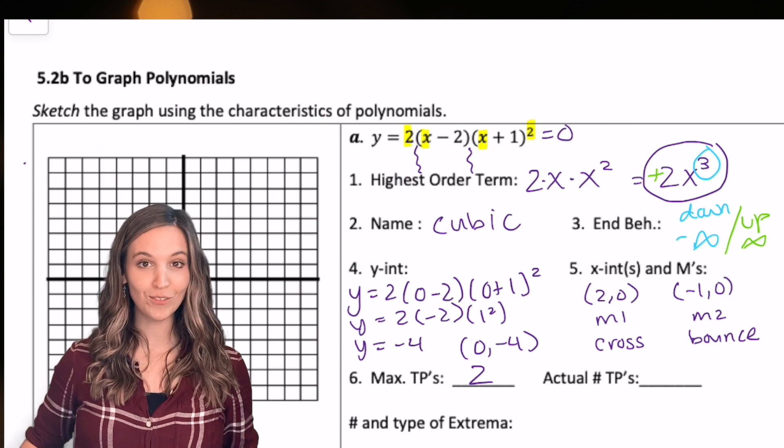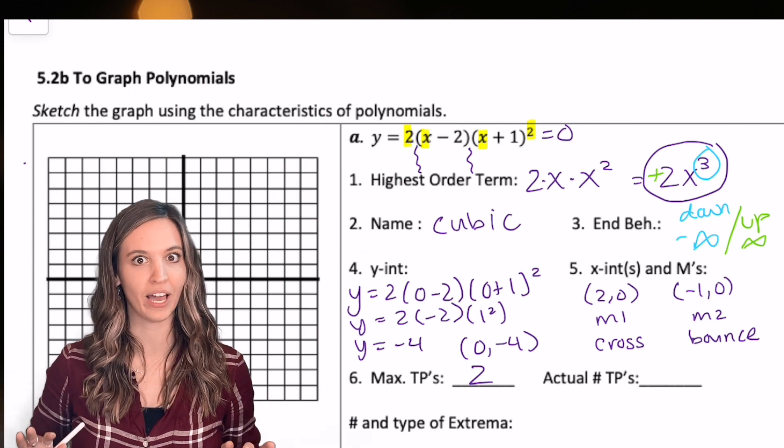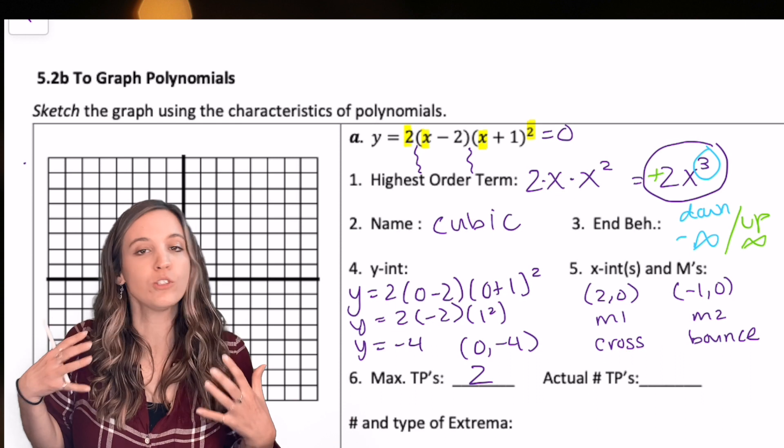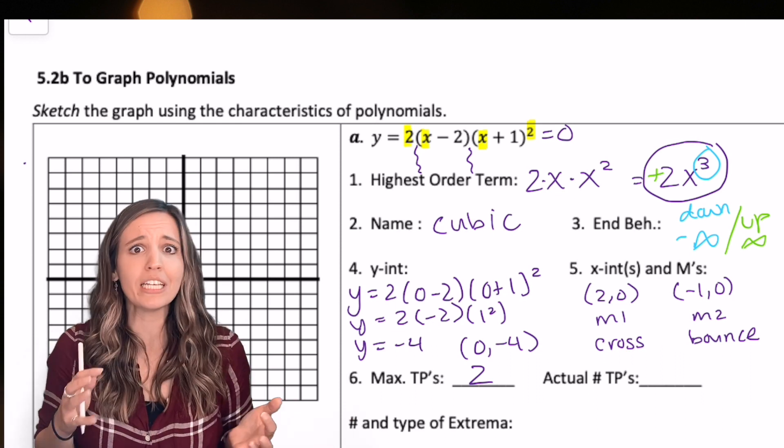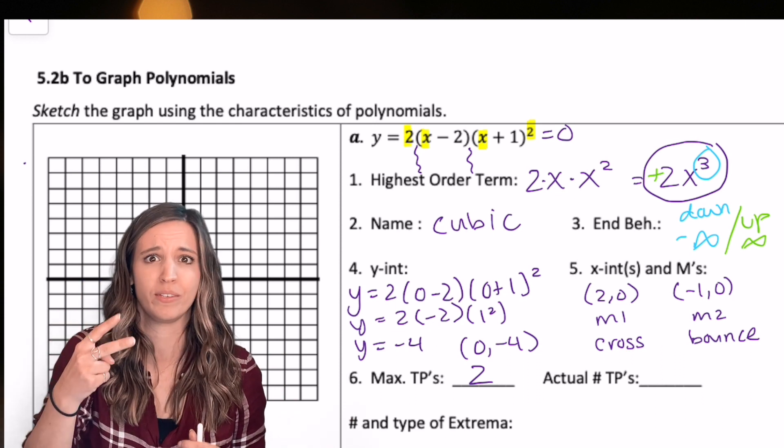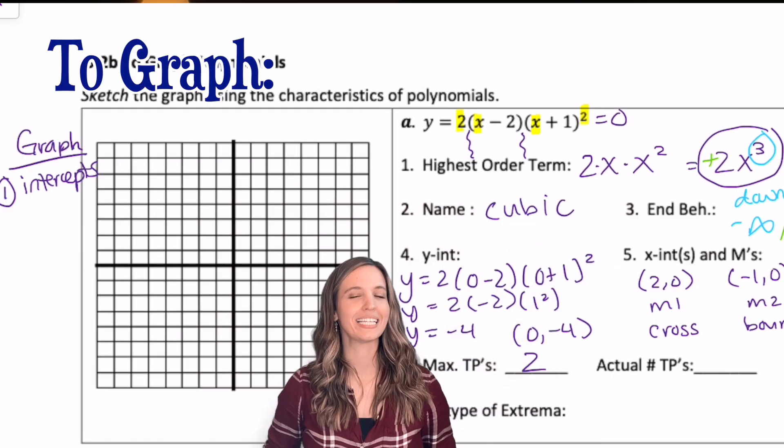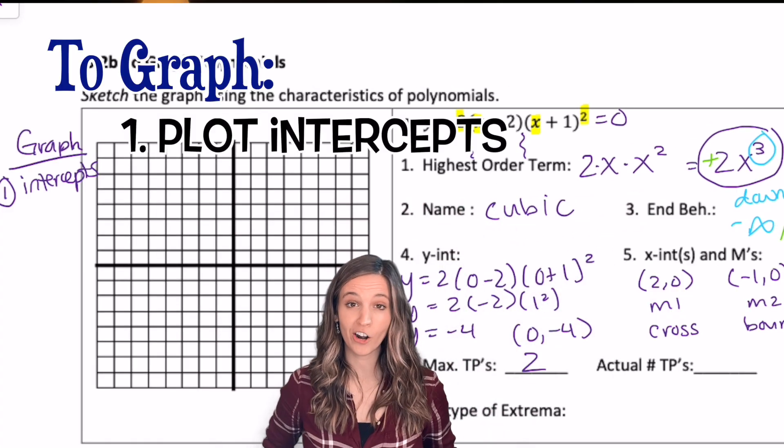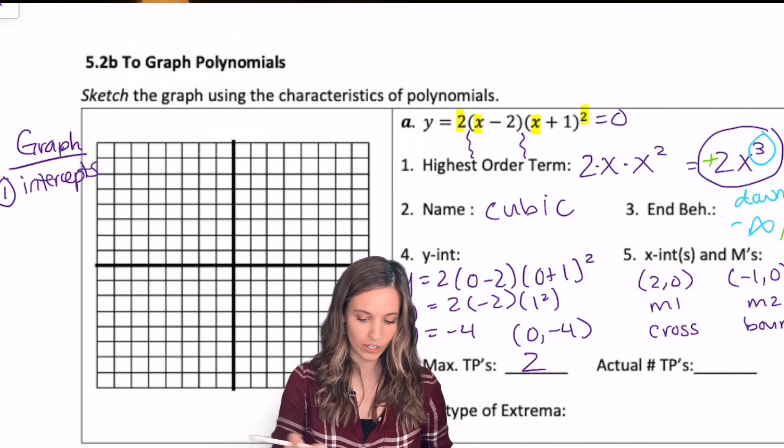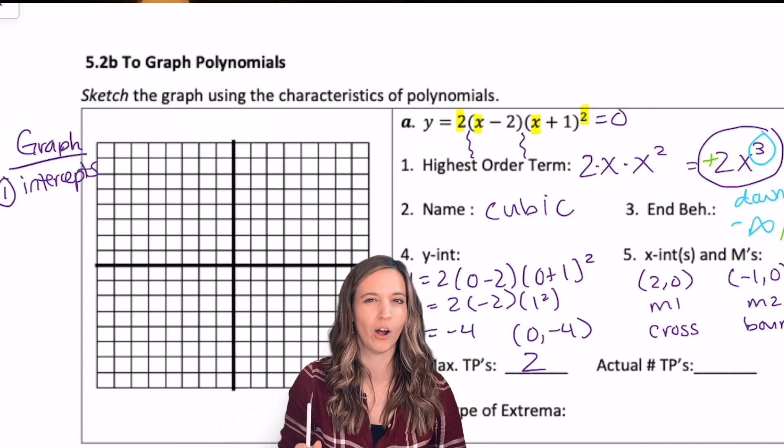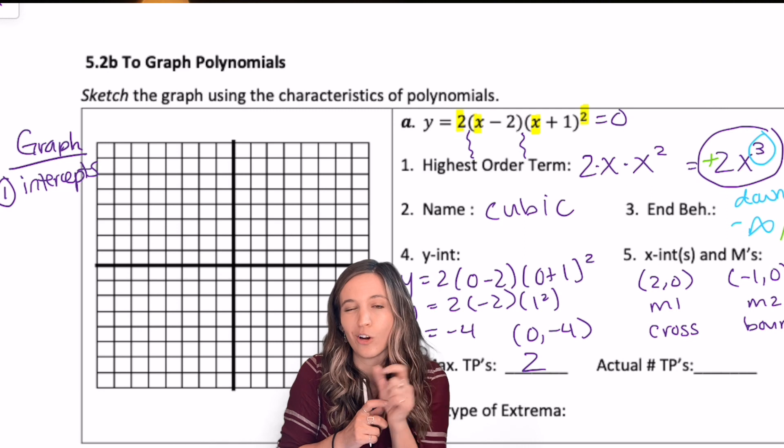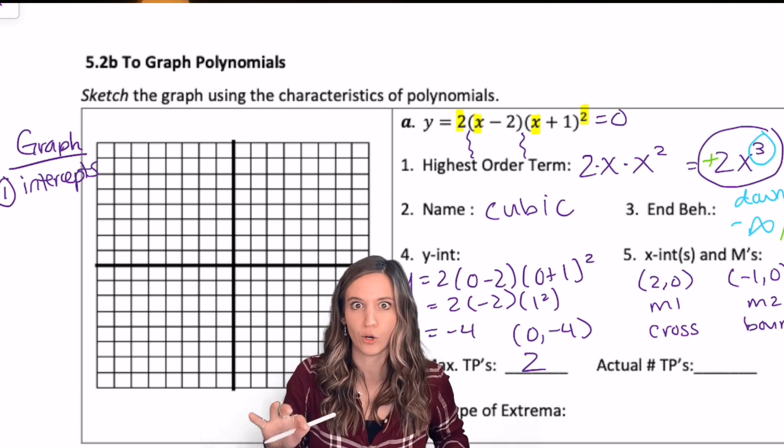We just took our inventory, so we're ready to graph. Now graphing, we know so much already, so graphing we can really do in two quick steps. Step one to graphing: Plot our intercepts. I've got x-intercepts at two zero and negative one zero. I'm going to put a little c next to the crosses and b next to the bounces so that I don't forget.